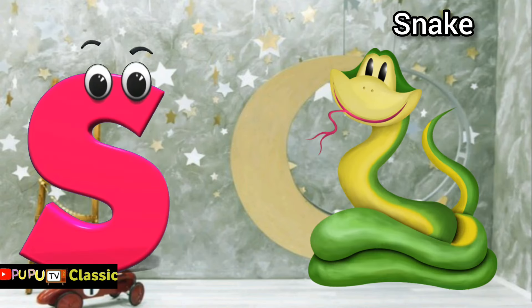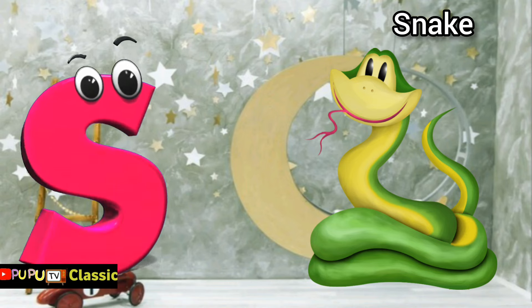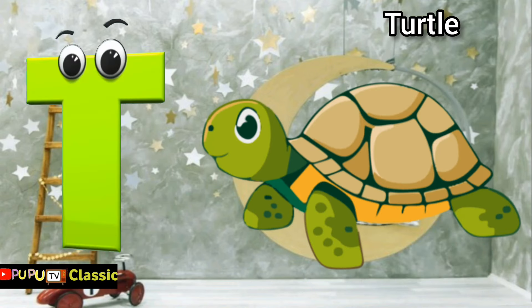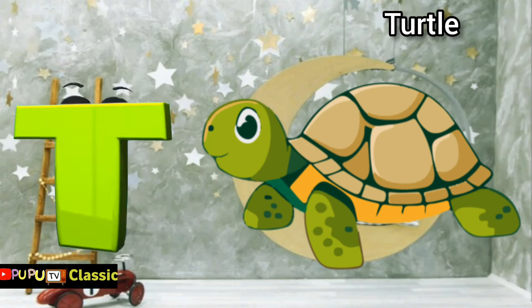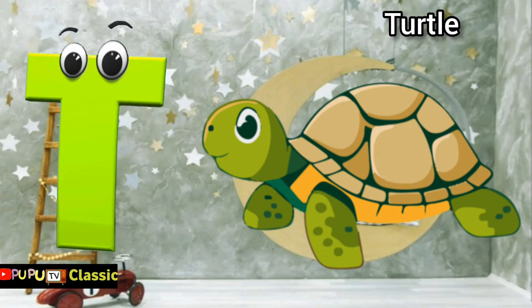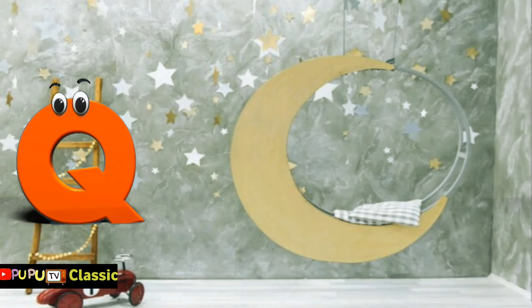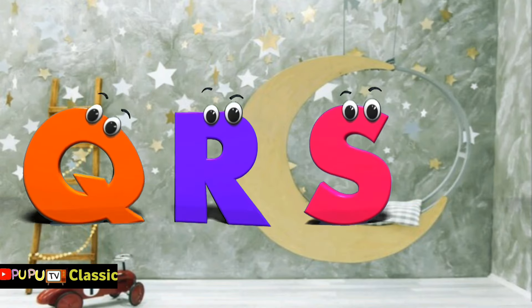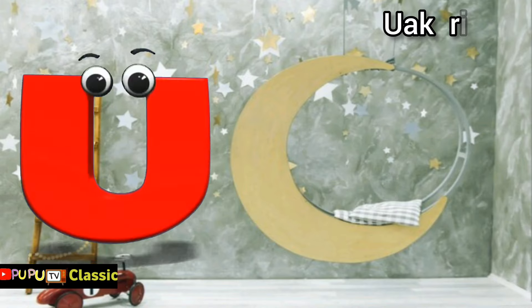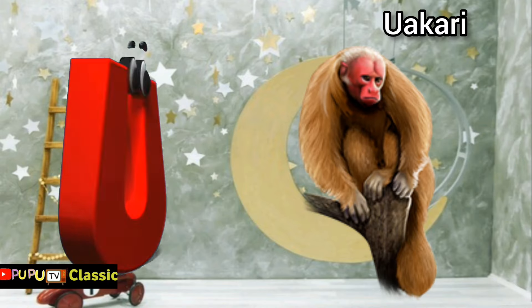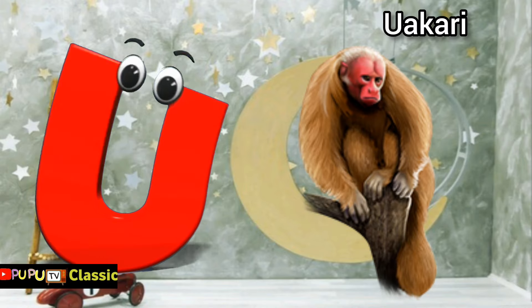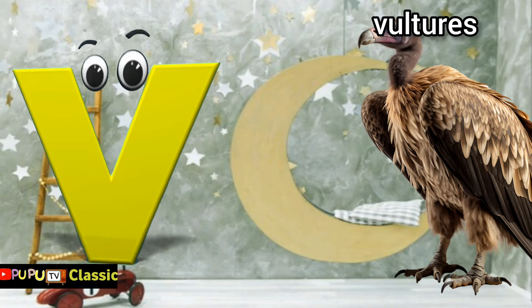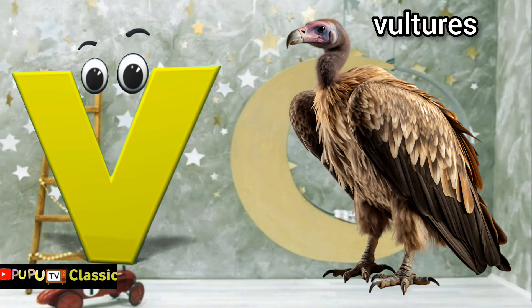S is for snake. T is for turtle. U is for uakari. V is for vulture.